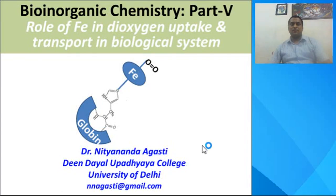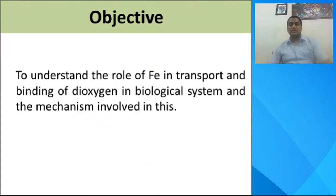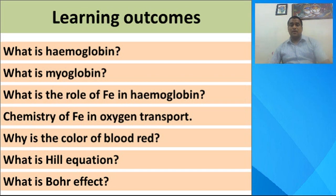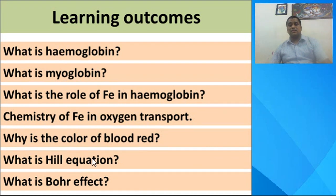Welcome to the lesson on the role of oxygen in dioxygen uptake and transport in biological systems, part of inorganic chemistry. Our objective is to understand the role of iron in transport and binding of dioxygen in biological systems and the mechanism involved. The learning outcomes include: what is hemoglobin, what is myoglobin, what is the role of iron in hemoglobin, chemistry of iron in oxygen transport, why the color of blood is red, what is the Hill equation, and what is the Bohr effect.